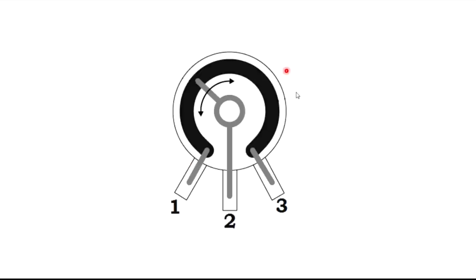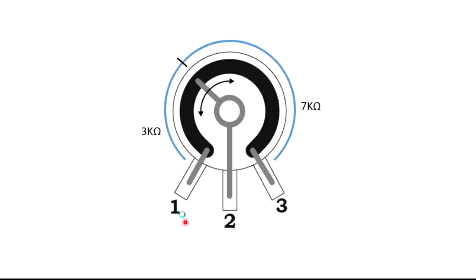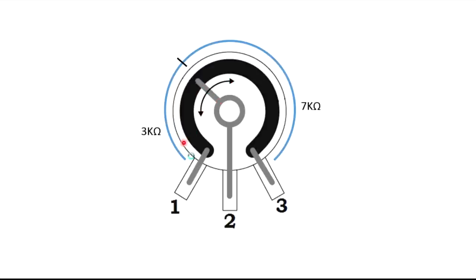This is the internal diagram of a 10 kilo ohm potentiometer. 10 kilo ohm is along the first and third pins. You can change the resistance between the first and second pins by turning the knob. As you turn the knob, this metal contact goes left and right. And depending upon the knob position, you get a resistance between first and second pins and in this case, it is 3 kilo ohm.